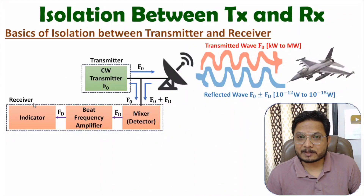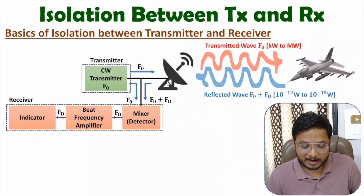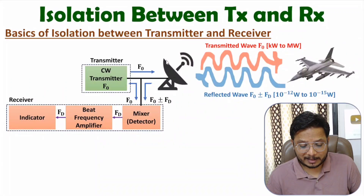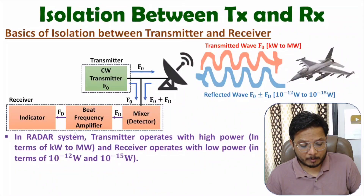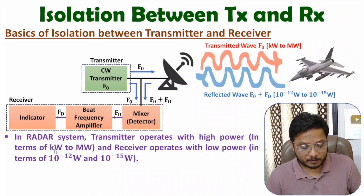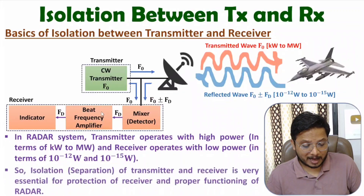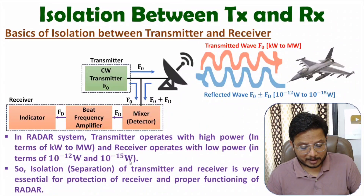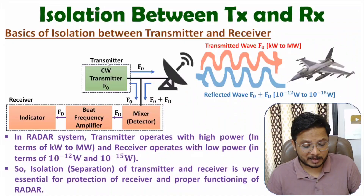We need to have isolation between transmitter and receiver. In some books, you might have observed block diagrams where a duplexer is added, or you can have the same block diagram with two separate antennas — one antenna connected with the transmitter and another connected with the receiver. The transmitter operates with high power in terms of few kilo volts to mega volts, while the receiver operates at 10 to the power minus 12 V to 10 to the power minus 15 V. It is very essential to have isolation, otherwise the radar system may not function properly, and you need to provide protection to the receiver. That is why isolation of transmitter and receiver is compulsory.